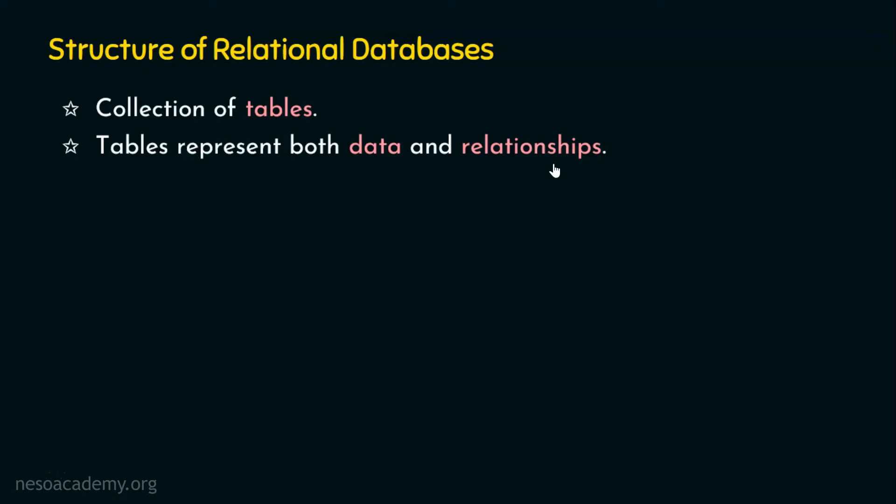Let's take a student table. This student table contains multiple attributes or columns. Let's take only two columns: role number and name. For example, if role number is 101 and the name of the person is Mohammed Khan, then the relationship is that role number 101 is pertaining to the student Mohammed Khan. This means there exists a relationship among the values stored in the table — each value in a row has a relationship with other values.